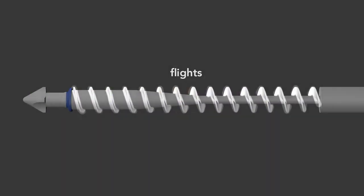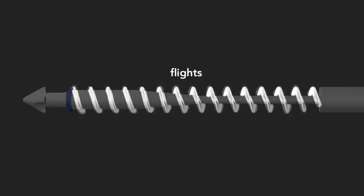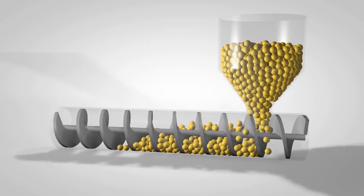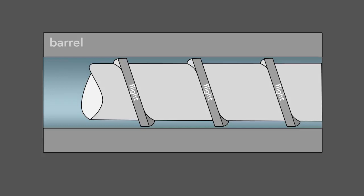Second, the screw has flights that wrap around the shaft. As the screw rotates, the flights transport the raw material forward through the barrel. The flights also serve to mix the plastic. The screw action agitates the melting pellets within the flights to create a uniform mixture.